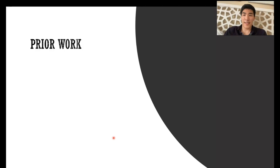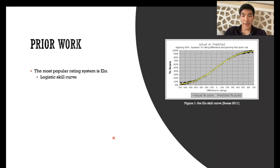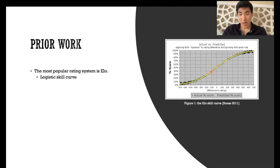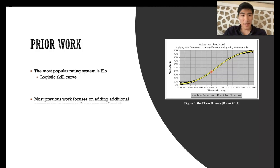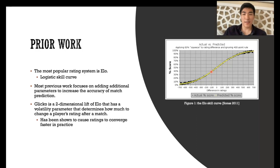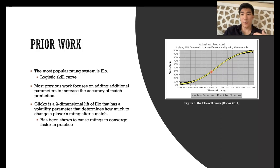Discussing prior work, ELO is the most popular rating system to the point that ratings are sometimes just called ELO. It's based on the logistic skill curve, shown on the right, where a rating difference of minus 100 would be associated with a win percentage of 40% in this case. Most previous work focuses on adding additional parameters to increase accuracy of match predictions. For example, we have Glicko, which is a two-dimensional lift of ELO that also incorporates a volatility parameter.